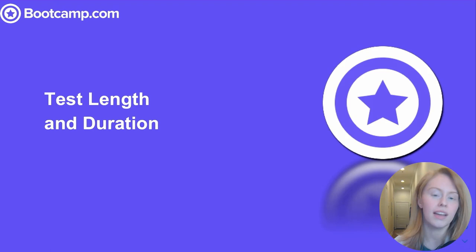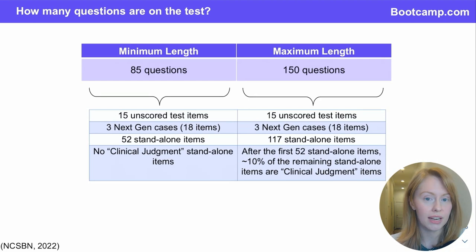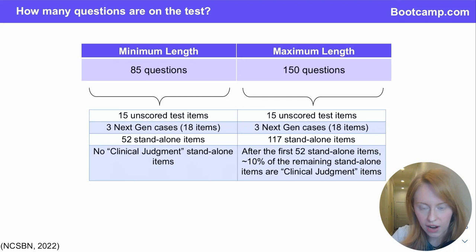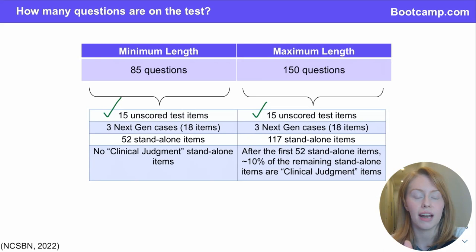Now let's look at the test length and duration. We've already discussed how computerized adaptive testing works to determine whether you need a minimum or maximum length or something in between in order to demonstrate your ability. But your test might actually begin to look a little bit different and incorporate new item types if you require longer than a minimum length exam. So every candidate, no matter how long your exam is, answers 15 unscored test items. These aren't scored — they're being tested for use in future exams for other candidates and they aren't labeled in any way as being test items.